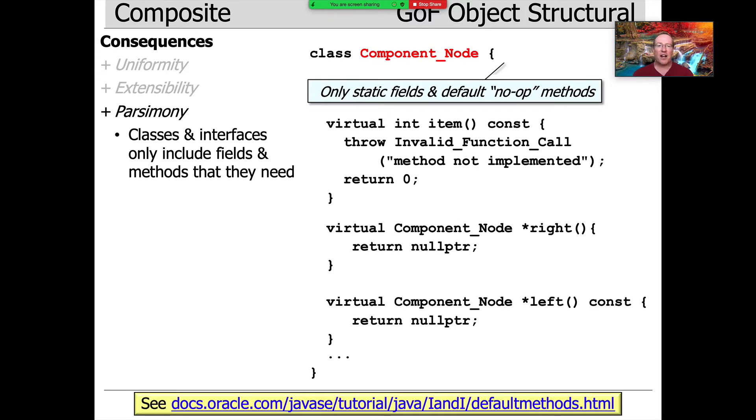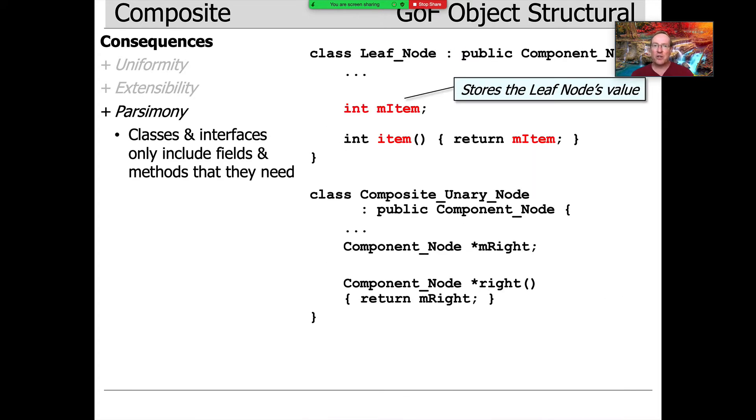Here's an example. You can see that the methods it defines, like item, right, and left, those are all basically no-ops, or they throw exceptions if you call them. So they just don't do anything. And then it's up to the subclasses to override those methods and to override them selectively. So here you can see a leaf node overrides the item method and will return the item that's stored by the constructor of the leaf node. If you go back and look at the implementation part of this, you'll see that we had a constructor that stored the value in the item field. And here the item method just returns the m-item data member, the value that's stored in that leaf node.